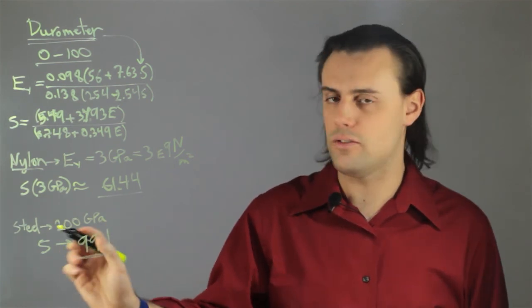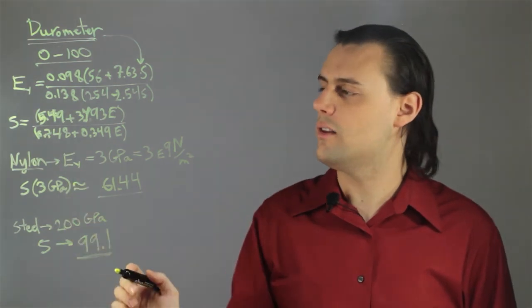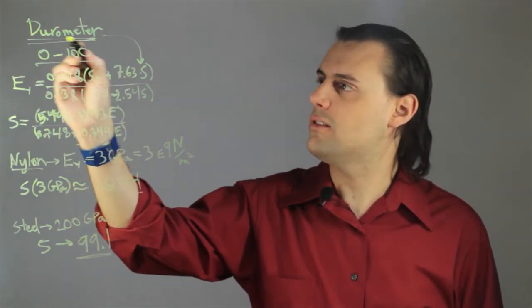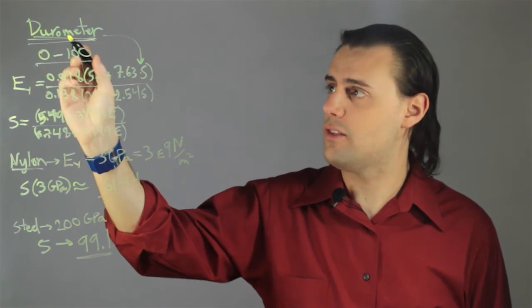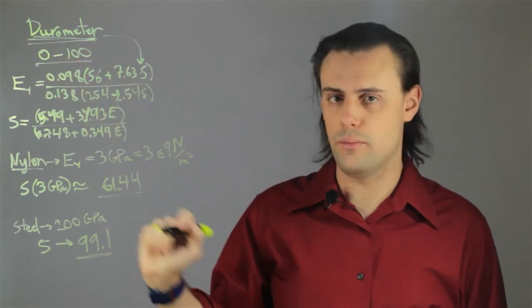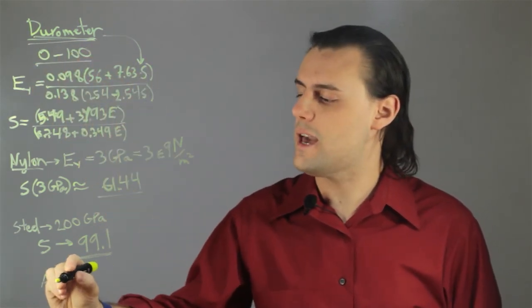So we see that steel is a much harder material than nylon is. And this is the essence of a durometer. And there are different scales, the two most common being the A and the D scales.